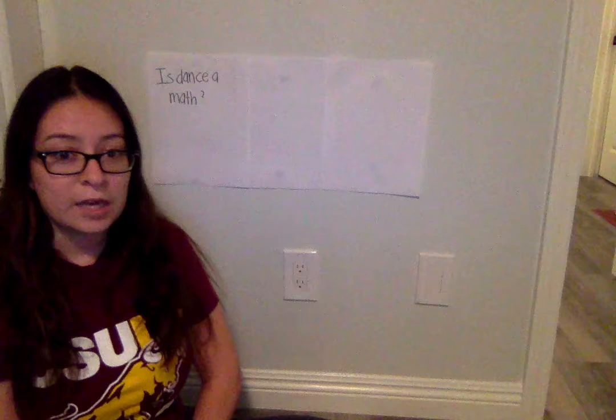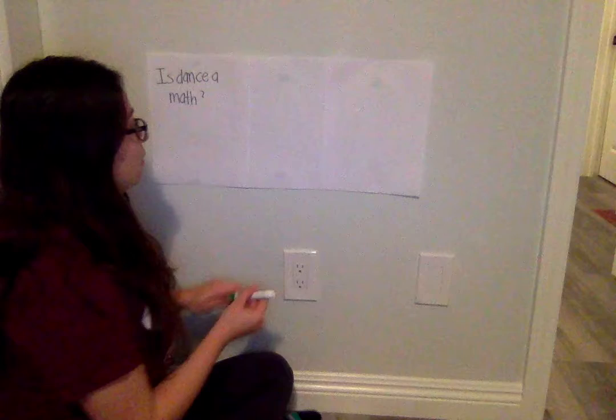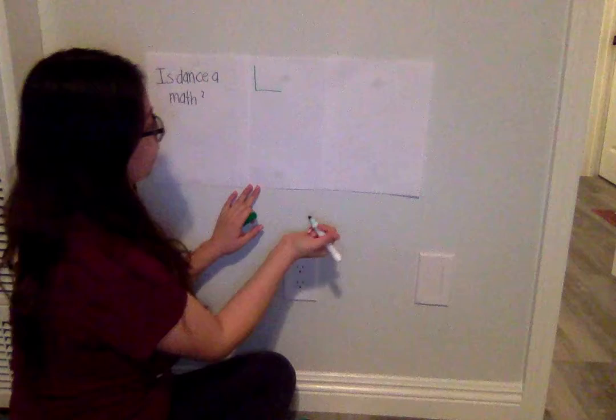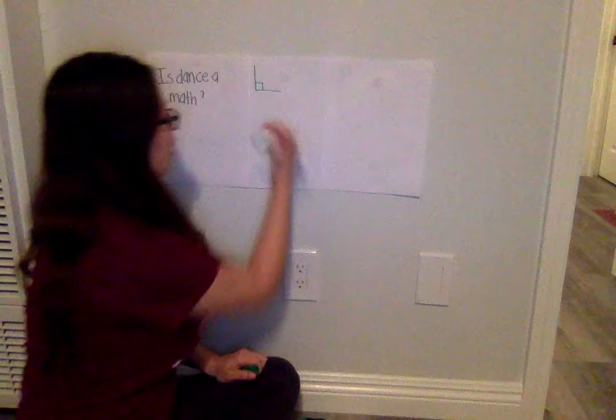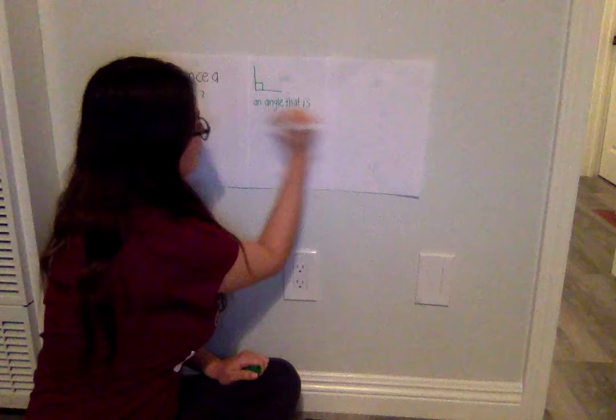So today for our geometric angles, we will be learning about the right angle. The right angle looks something like this — it is an angle that measures 90 degrees. I will be writing the angle and its definition on the board. If you guys can please open up your notebooks and write it down with me. A right angle's definition is an angle that is 90 degrees.